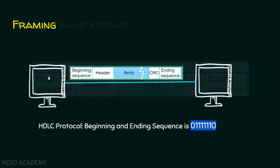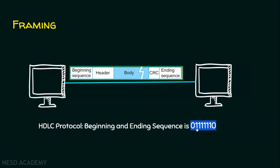Let's see it now. If this is the sender and the sender is going to send some data — which is obviously a group of bits — this will be the beginning sequence and this will be the ending sequence. The beginning sequence and ending sequence in HDLC will be 0, 1, 1, 1, 1, 1, 1, 0.